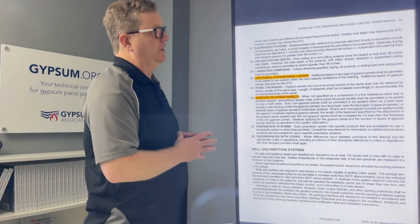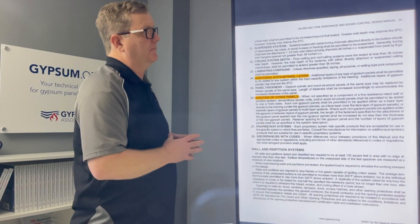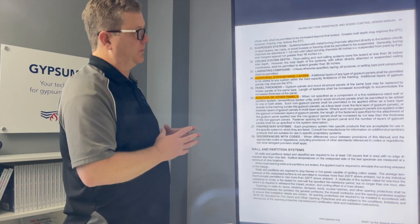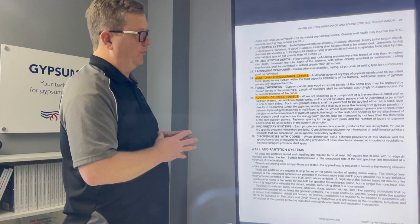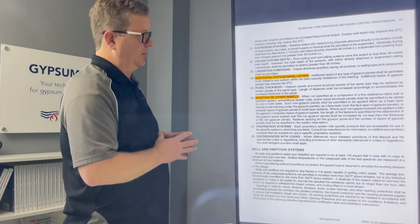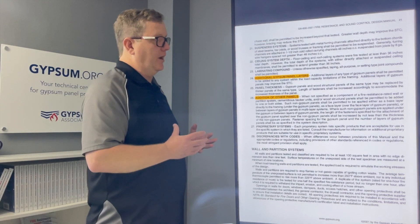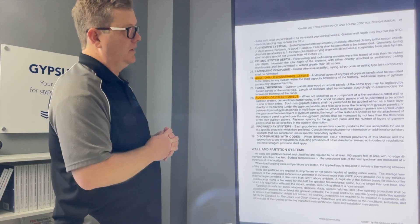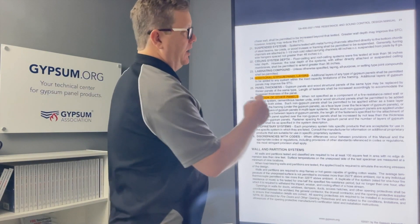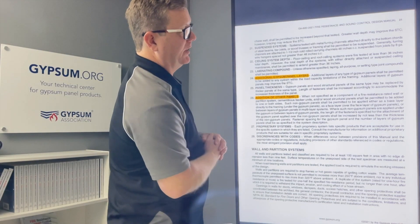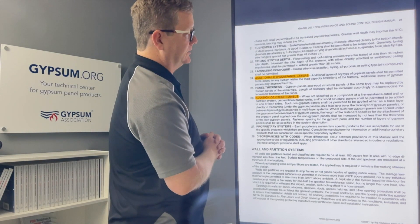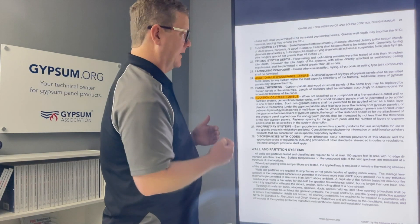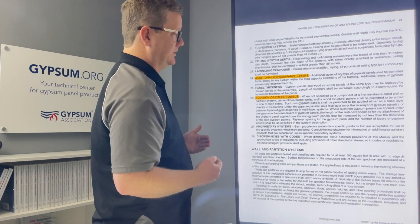On the final page within this section, page 21, I've noted another two explanatory notes that we use quite frequently to answer questions. Can you put additional layers of gypsum panels within your fire rated system? I'll read this one: 'Additional layers of any type of gypsum panels shall be permitted to be added to any system within the load capacity limitations of the framing. Additional layers of gypsum panels may improve the STC.'